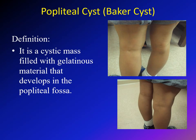So what is a Baker cyst? Sometimes we refer to it as a popliteal cyst. It is a cystic mass filled with gelatinous material — a cyst that has gelatinous material inside it — and it develops in the popliteal fossa, which is the posterior part of the knee.